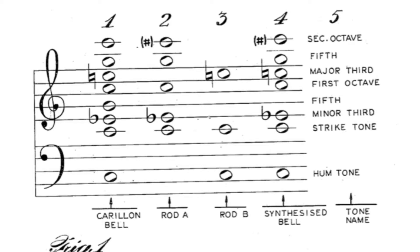The final column does show the composite overtone structure from the two rods, and it has all but one of the partials necessary for a good carillon bell.